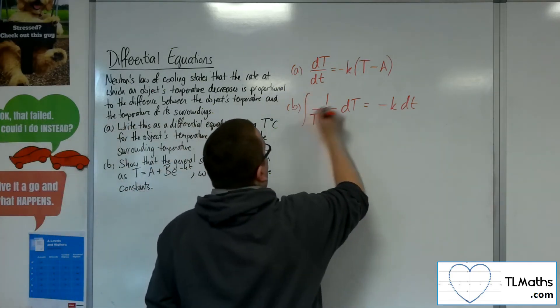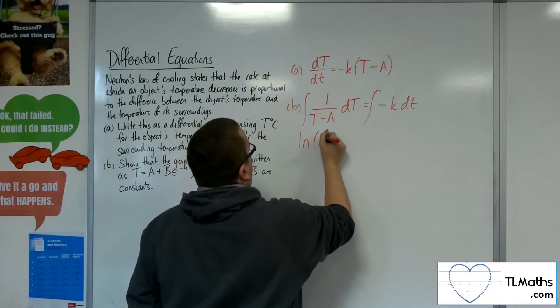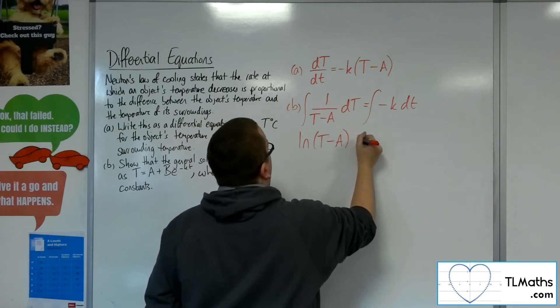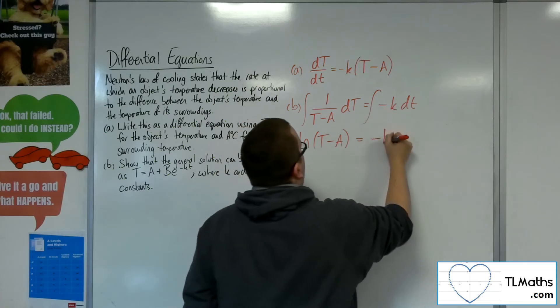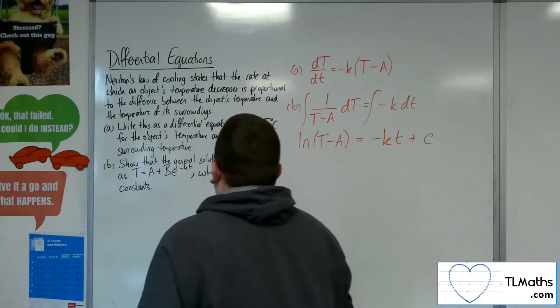Then we can integrate. Right, so this will integrate to log of T minus A, and the right-hand side will be minus KT plus some constant C.